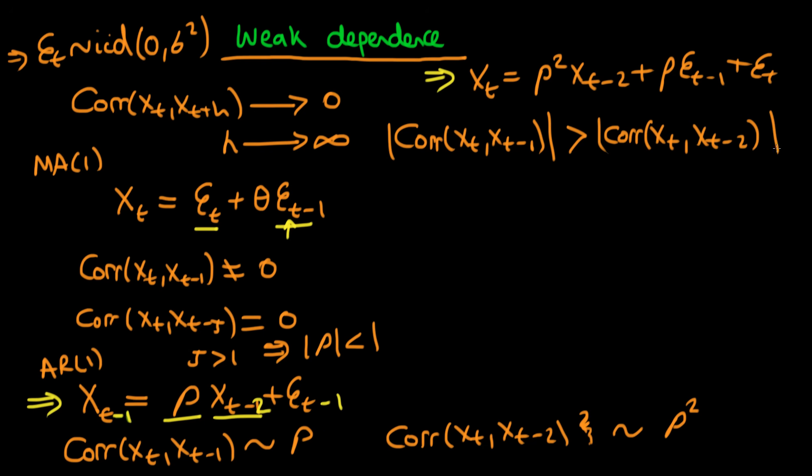This correlation decreases as the number of lags between X_t and X_{t-τ} increases. This condition is satisfied, so when ρ is less than 1, our AR(1) process is weakly dependent.